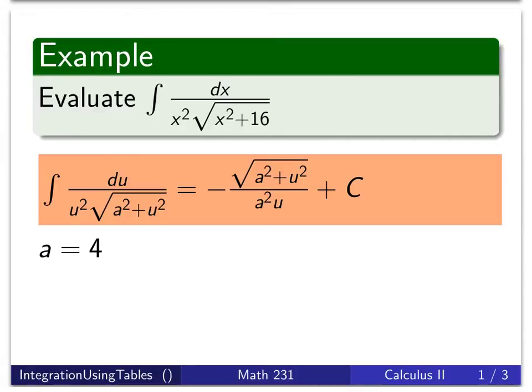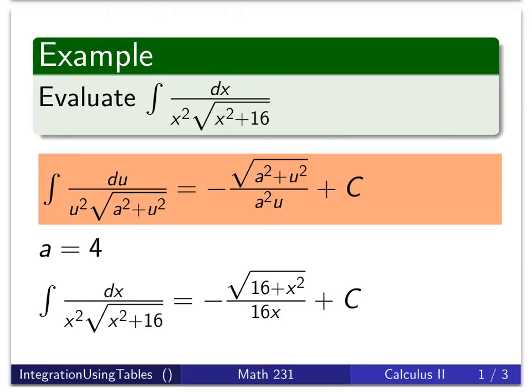And now it's just a matter of plugging things in. So we're going to get the opposite of a squared plus u squared over a squared times u. So it's the opposite of radical 16 plus x squared all over 16x plus our constant. So that's a very straightforward one.